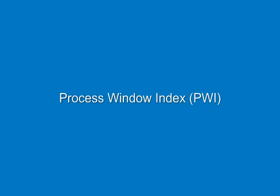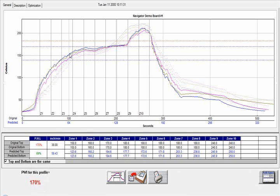The following presentation is on KIC's Process Window Index. A profile is a complex set of time-temperature values for a wide variety of process data such as slope, soak, reflow, and peak.